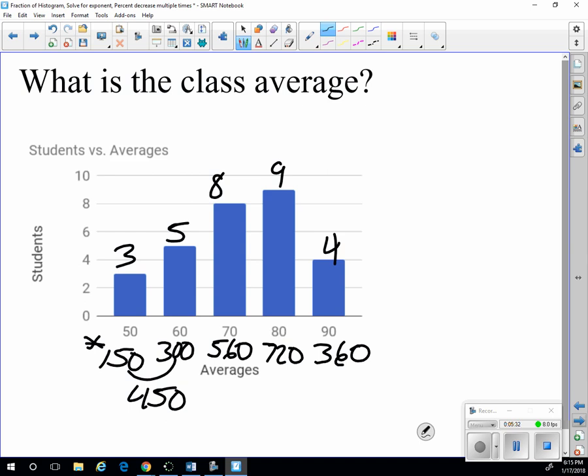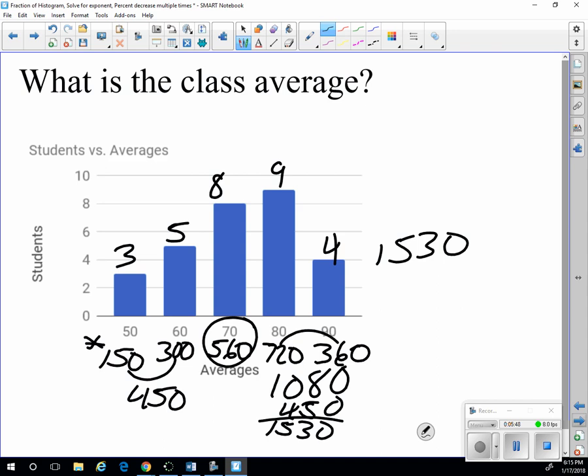And here we have 1080. So if I add my 450, then I get 1530. So I have 1530 plus the last category that I have not added in would be the 560. So that would be 2,090. So if altogether they earned 2,090 points,